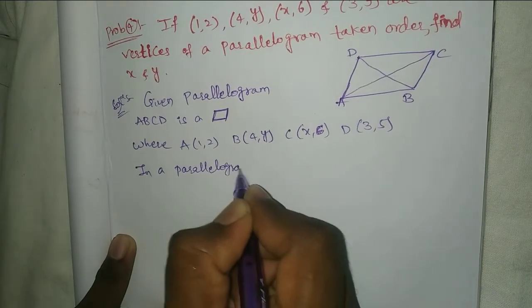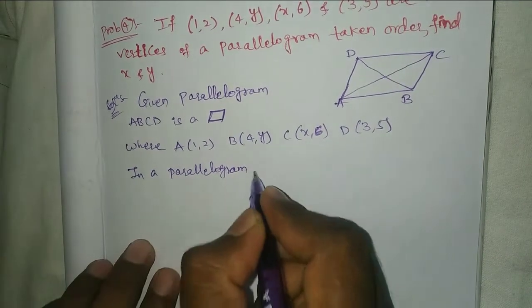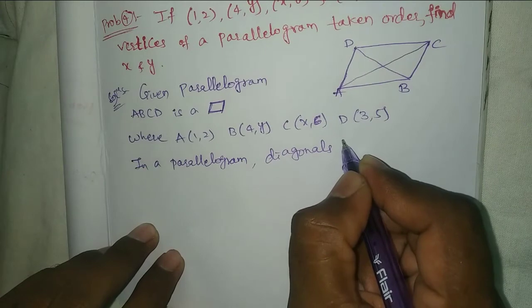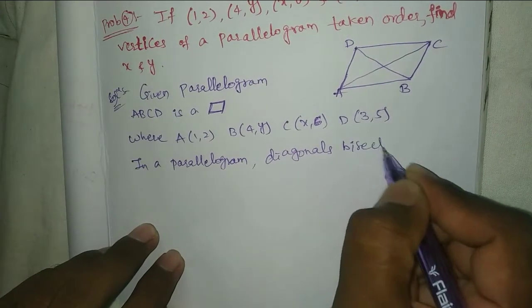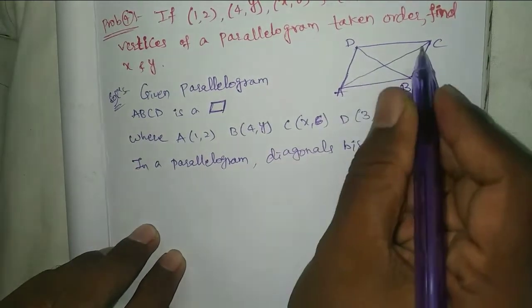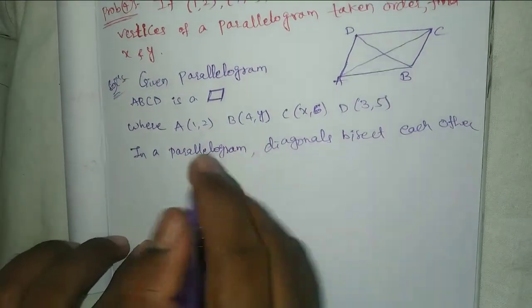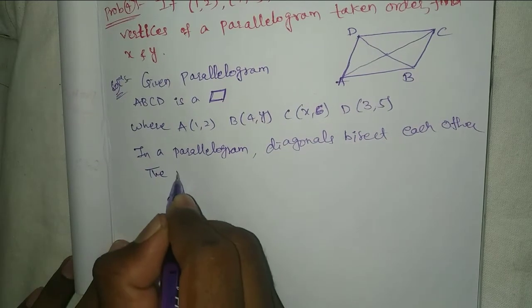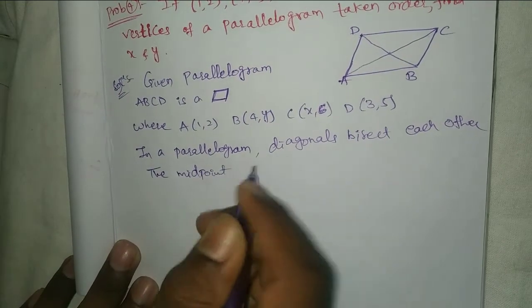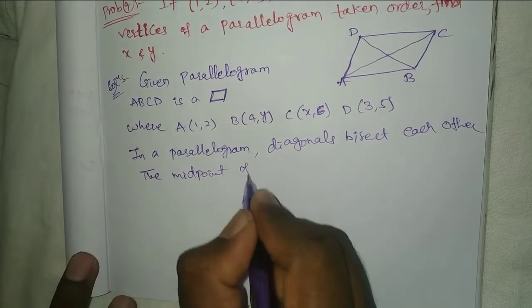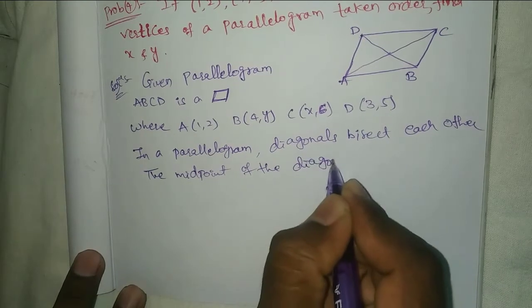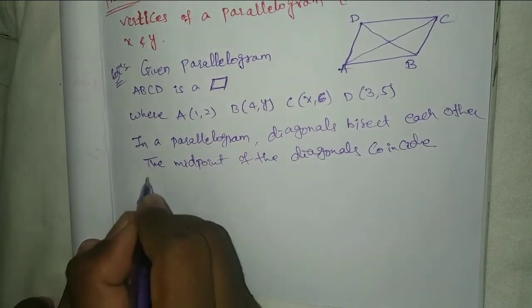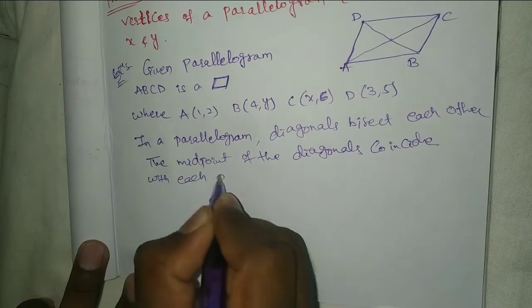In a parallelogram, diagonals bisect each other. These are diagonals that bisect each other. This is the midpoint. The midpoints of the diagonals coincide with each other.